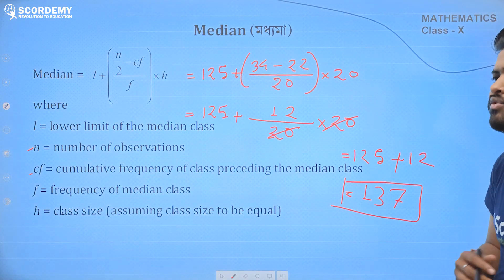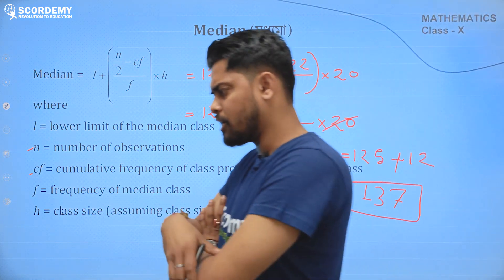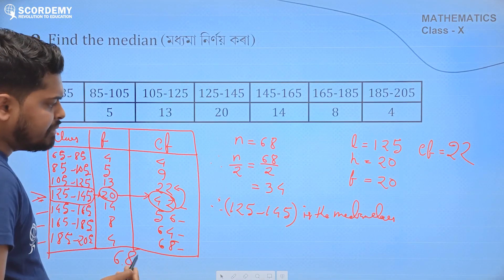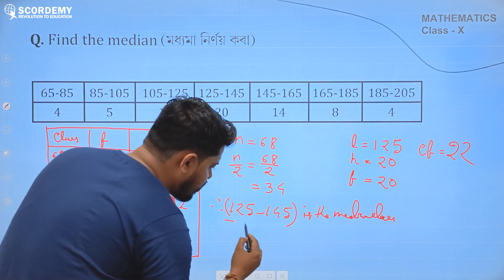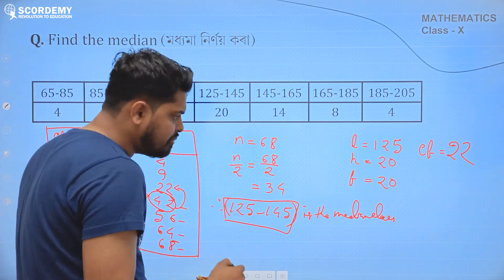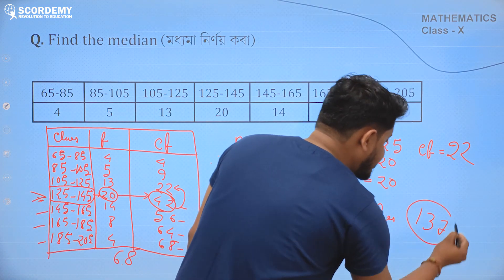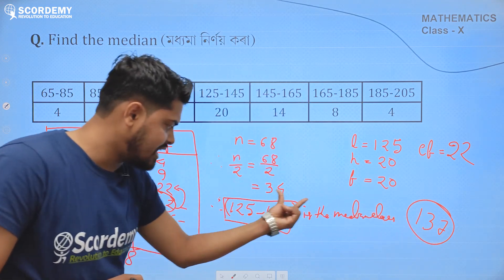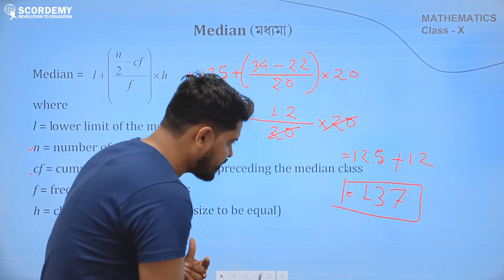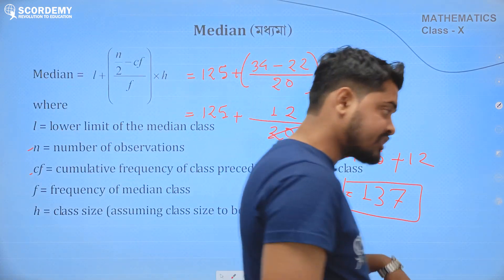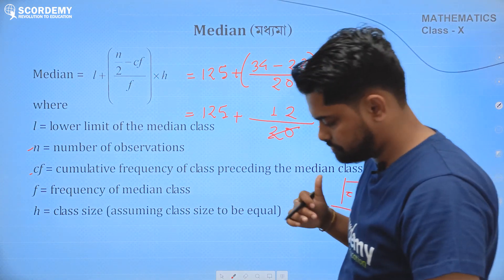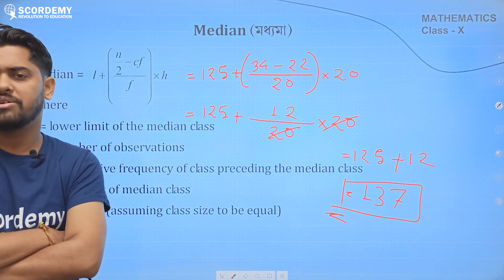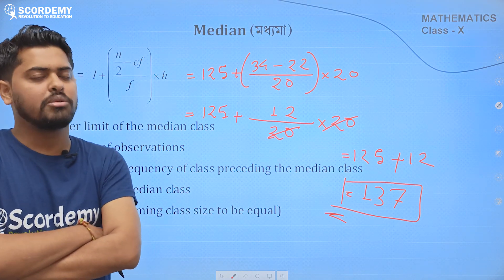The complete answer is 137. That is why we ask 5 marks for questions about this topic. The median of the given data is 137. This is the complete solution.